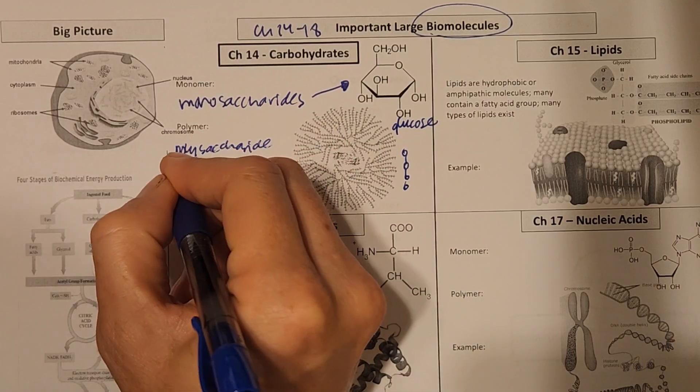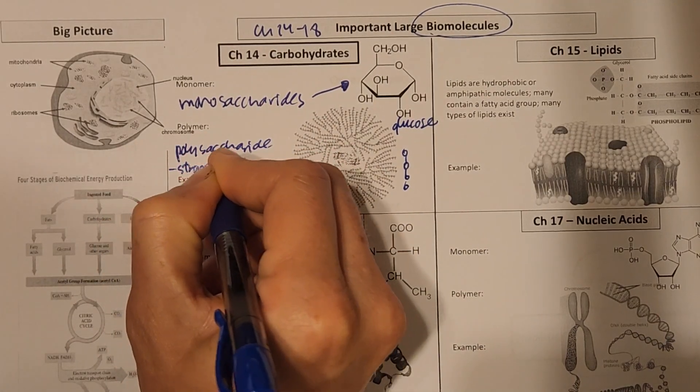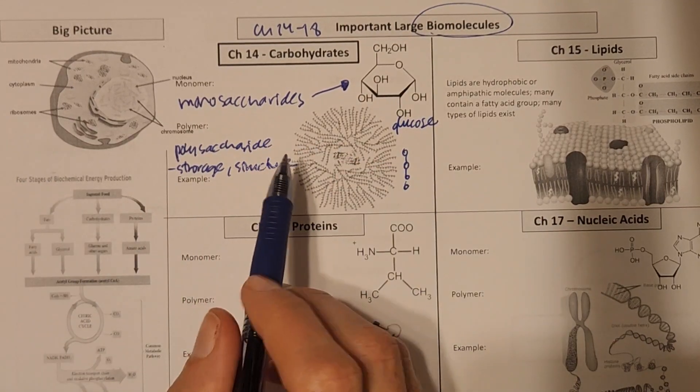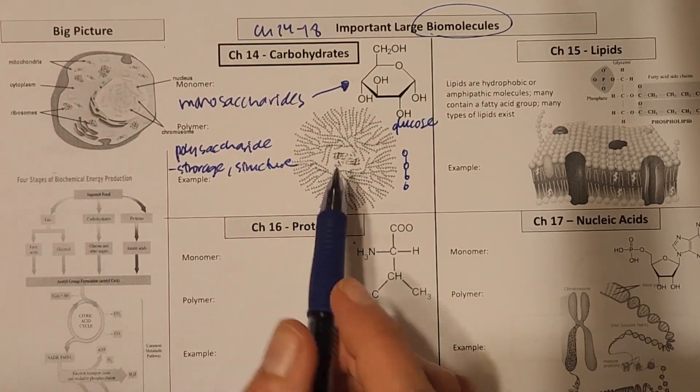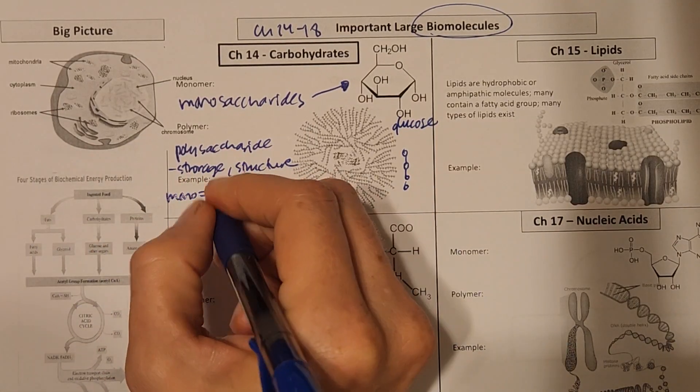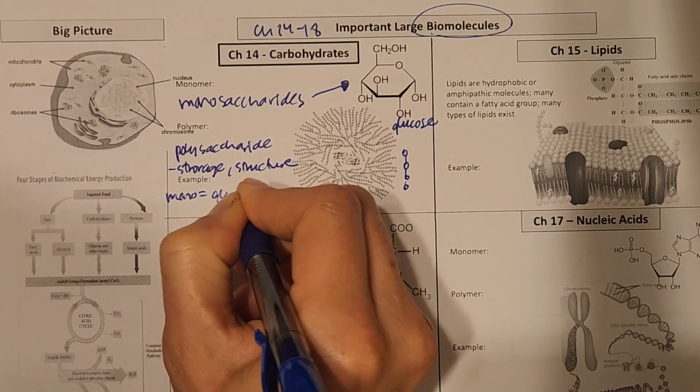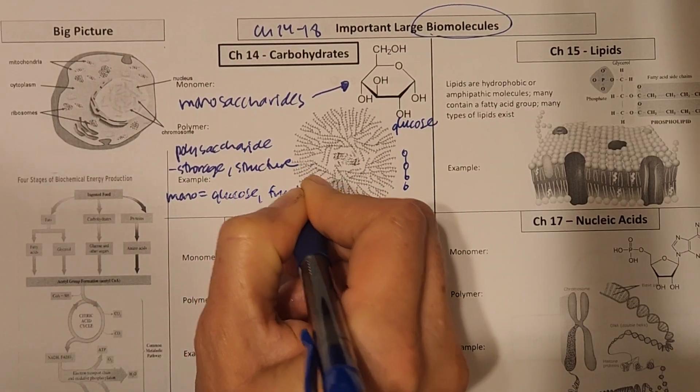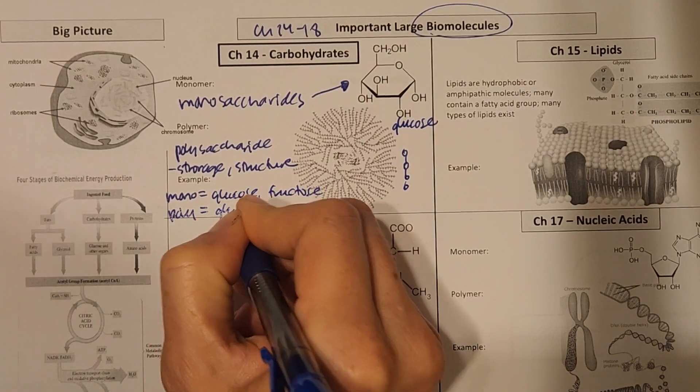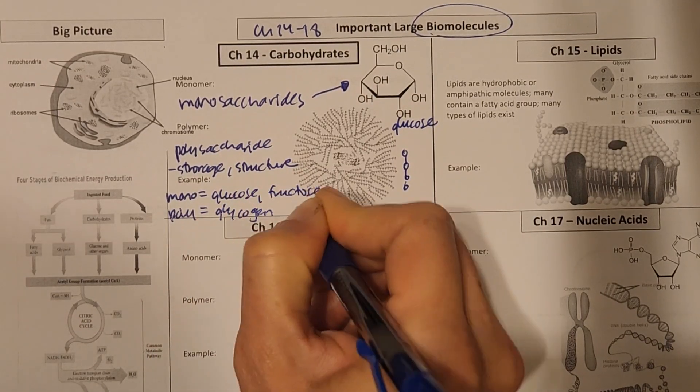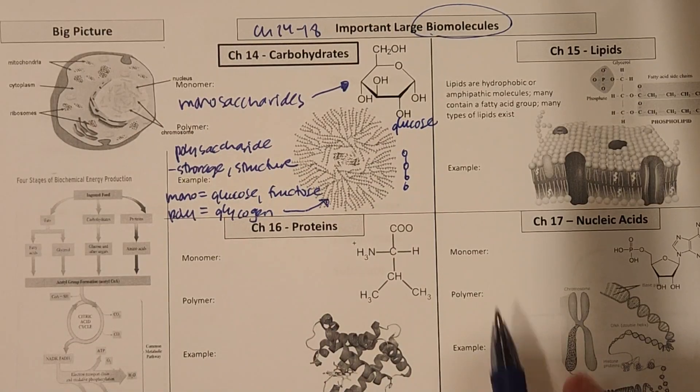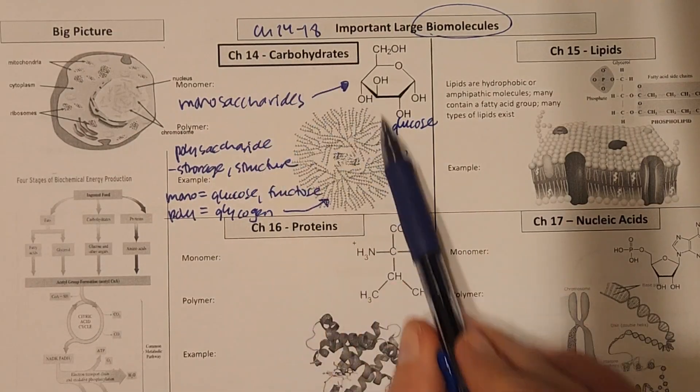And those polysaccharides can be used for storage, or they can be used for structure. Examples of these sugars, if we're talking about carbohydrates, monosaccharides, common examples would be the glucose like we have shown there, or fructose found in food. Example of polysaccharides, the one that's shown here is glycogen. And that's what animals use to store energy. So those are carbohydrates.